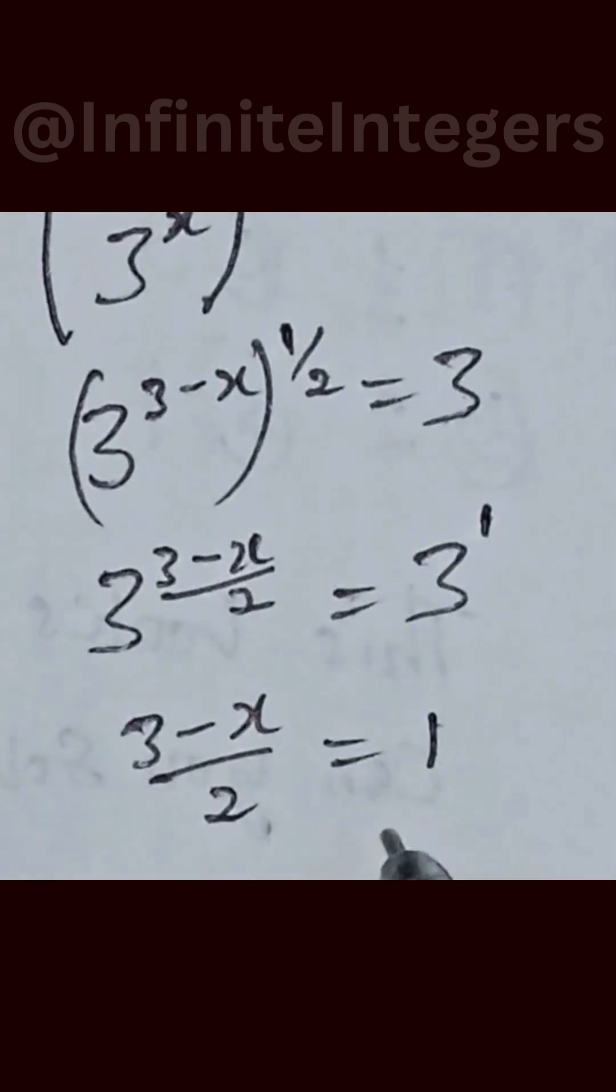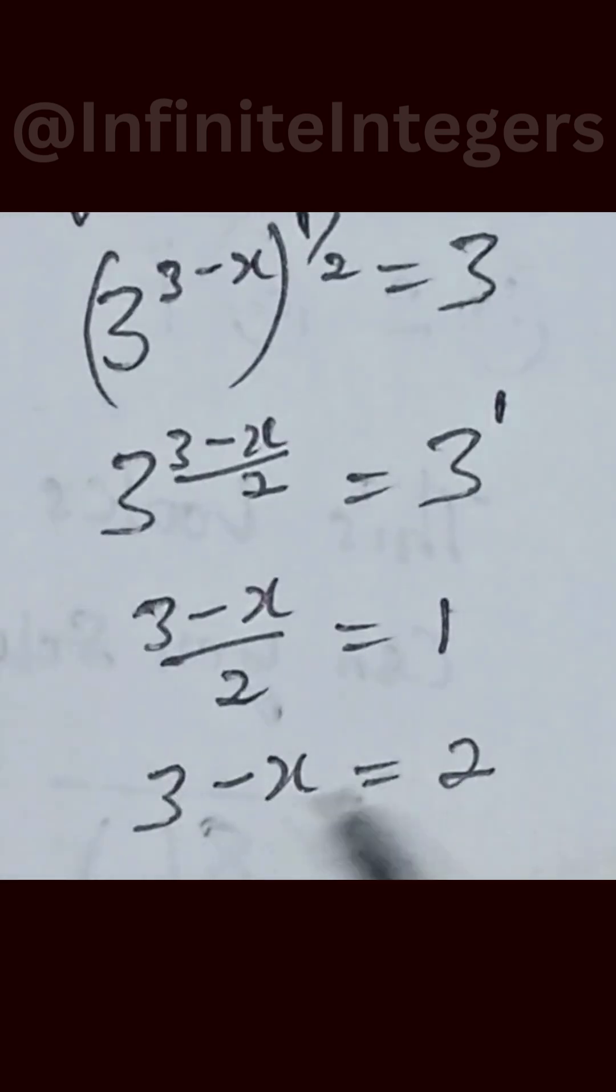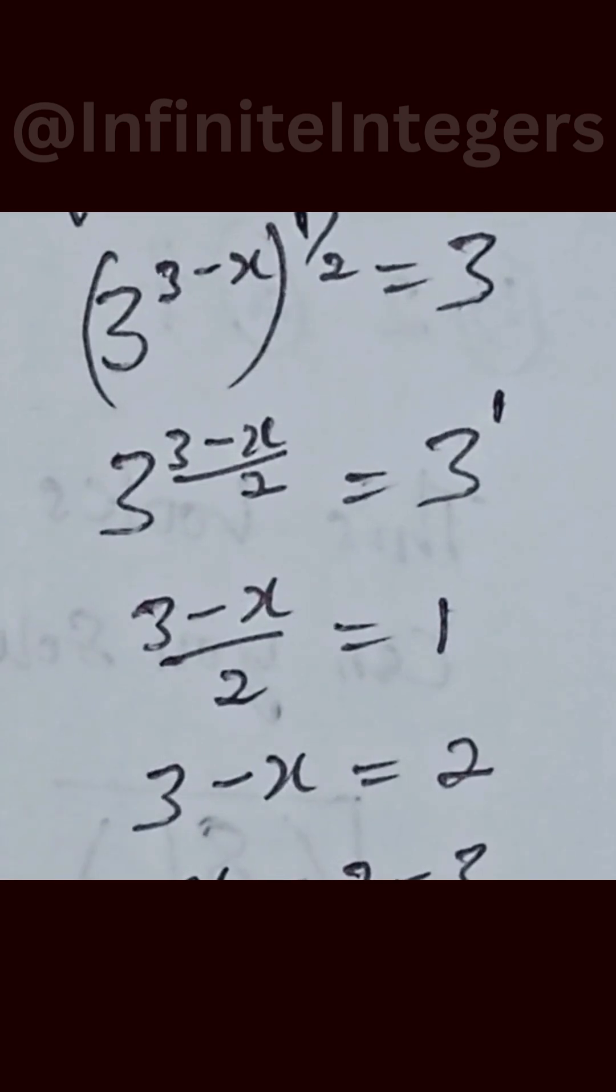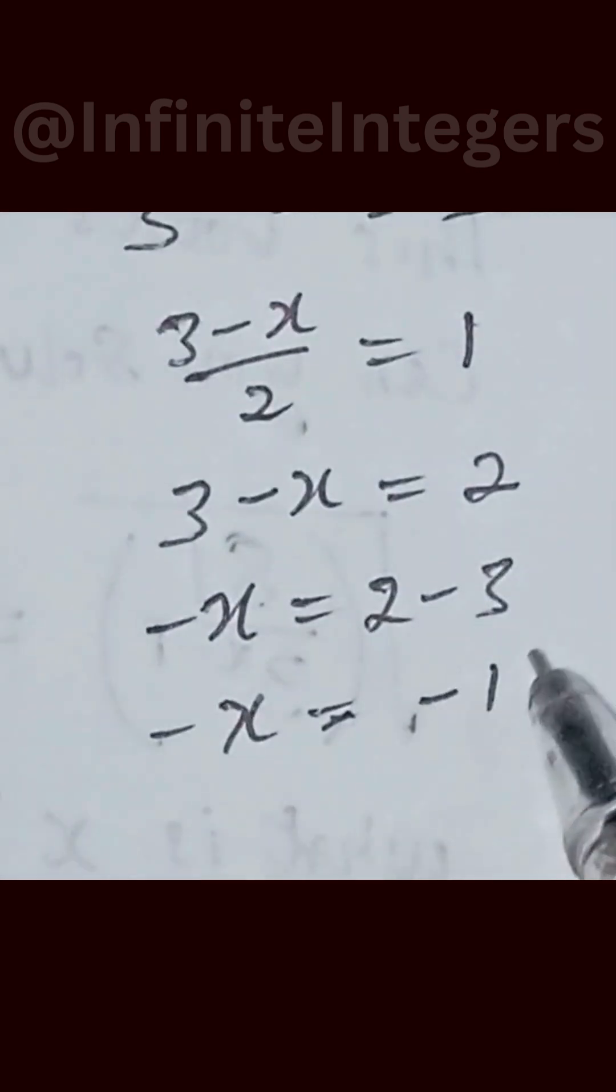Multiply these by 2. We have 3 minus x equal to 2. Move these 3 to the right hand side. So we have negative x equal to 2 minus 3, and that becomes minus x equal to minus 1. When we cancel out minus, then we have x equal to 1.